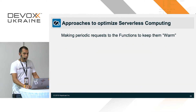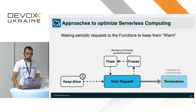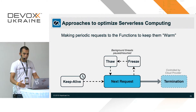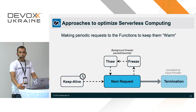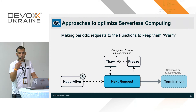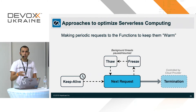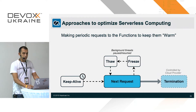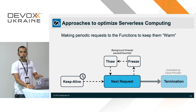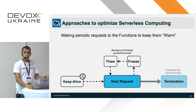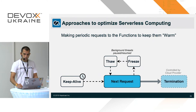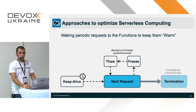A very common approach to optimize this is making periodic requests to keep the function alive. You put a keep-alive service — it can be a cloud provider service, another Lambda function, or a custom agent — that sends specific keep-alive events to your Lambda function. This decreases the chance of termination within the five-minute window. It generally doesn't make sense to send these requests more often than every five minutes — that's a common recommendation from all cloud providers.